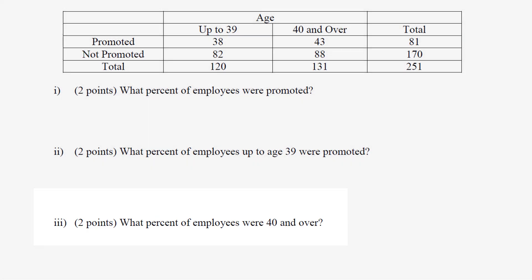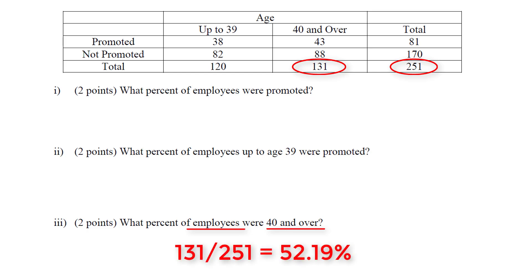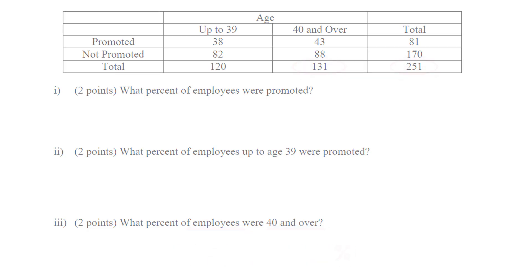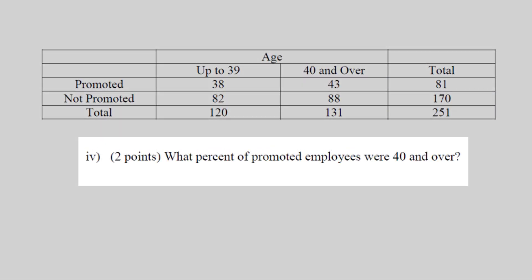Next: what percent of employees were 40 and over? This means we need to look at all employees again. We had 251 employees total, and there were 131 of them that were 40 and over. So 131 out of 251 total employees equals 52.19%.